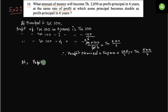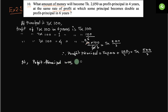Profit-principal... if profit-principal was Taka 500 by 3, then the principal was Taka 100.